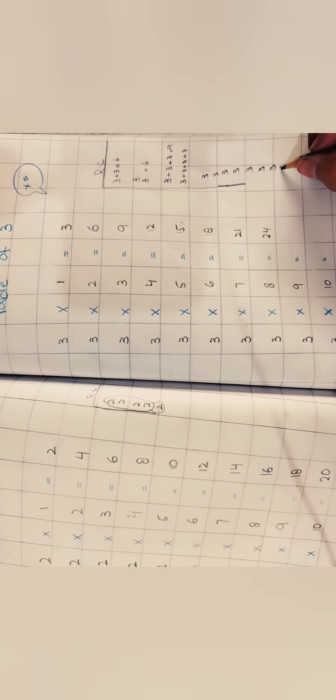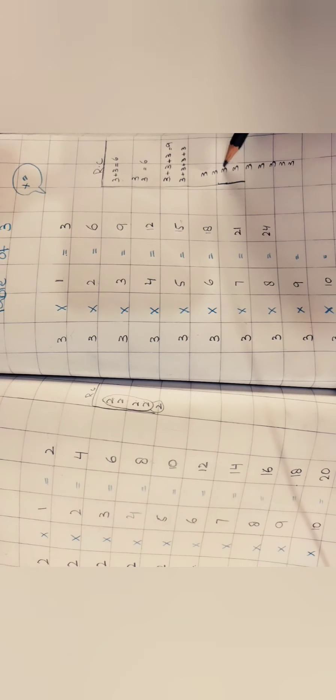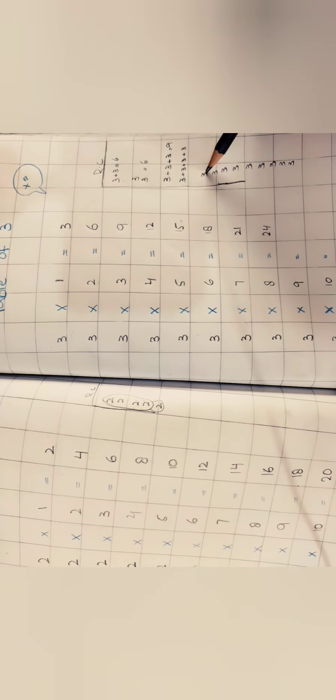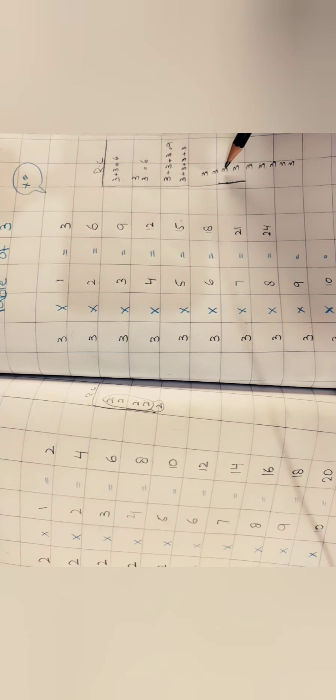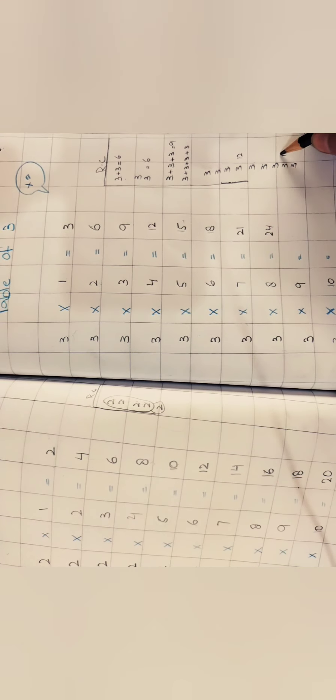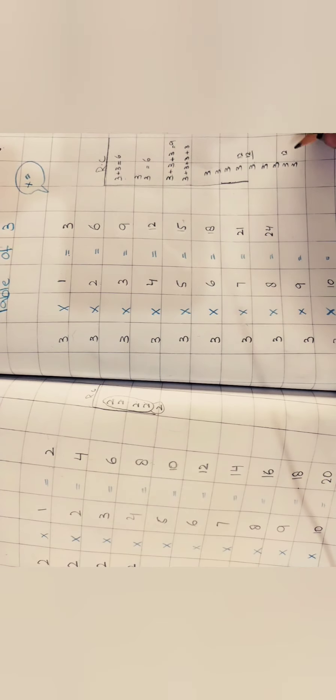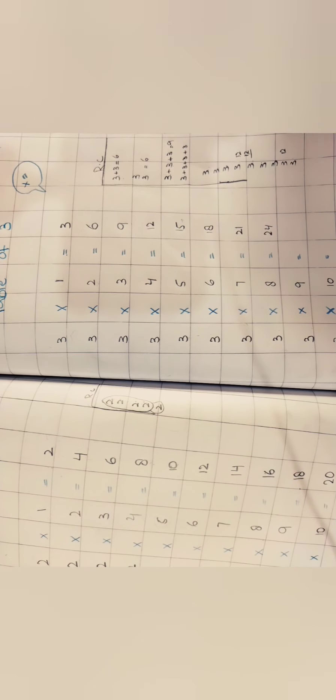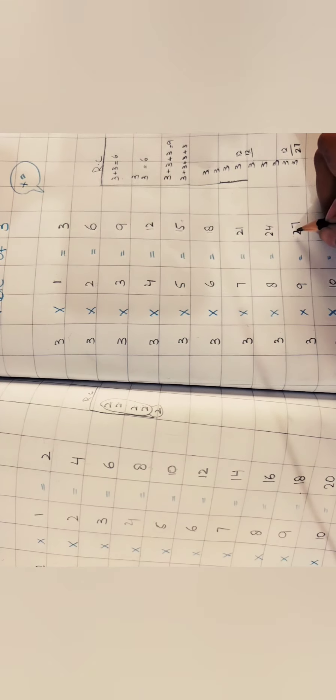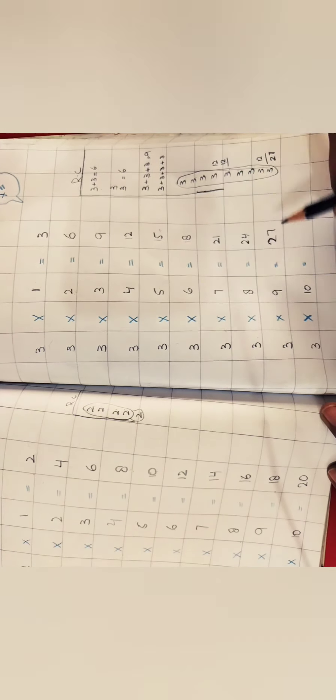Now add with me: three plus three is six, then six plus three is nine, nine plus three is twelve. Then the value becomes twelve, and twelve plus three gives fifteen, continuing up — twenty-four plus three is twenty-seven. So three nines are twenty-seven. You added three nine times and got twenty-seven.